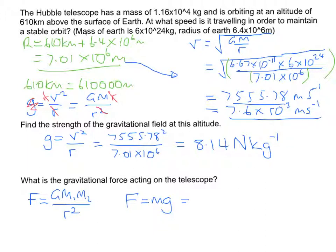So f equals mg which will be the mass of the satellite, 1.16×10^4, that's what the mass of Hubble telescope is, and we'll multiply that by g which we've just calculated, 8.14, and that will equal 9.4×10^4 newtons. That's the answer to that question there.